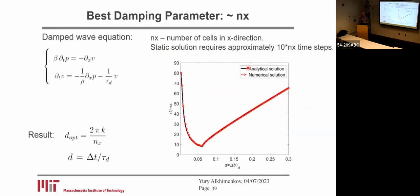Another important aspect is finding the best damping in this relaxation method. Generally speaking, a wave is traveling about 10 times in our domain before it reaches 10 to the power of minus 12 — so it reaches zero. The performance is proportional to the number of cells in the X dimension.